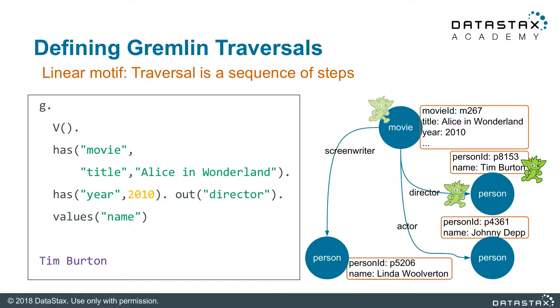Let's take a look at an example of a relatively simple traversal with what we call a Linear Motif. Our traversal starts with a couple of constructs. G is called a traversal source, and it knows about the graph we want to traverse and about the traversal engine we want to use. V is a method that defines all of the vertices in our graph. Starting with all the vertices, we are defining a sequence of steps that are going to be executed by traversers. The illustration of a small graph with one movie vertex and three person vertices will help us visualize how a traverser — this green Gremlin creature — moves in the graph.